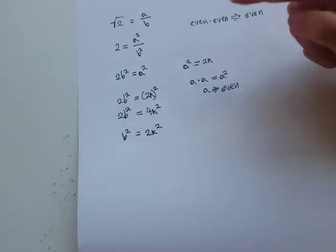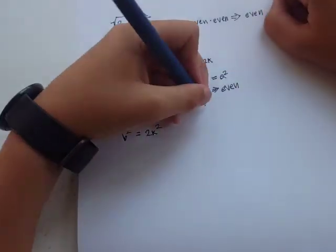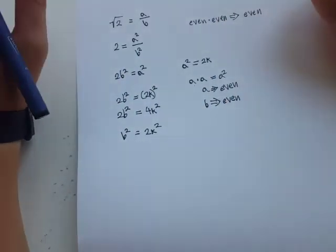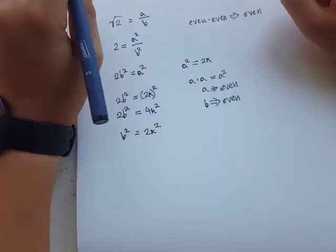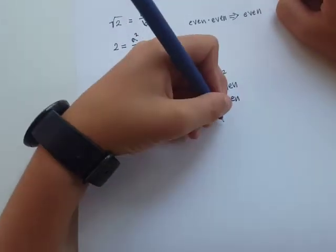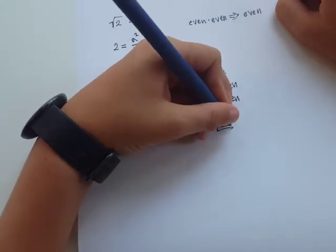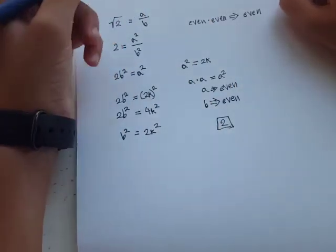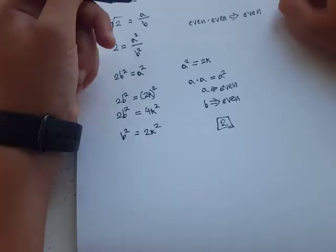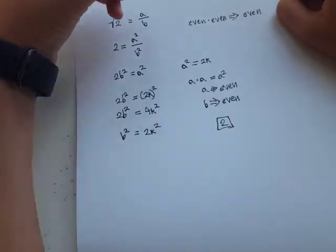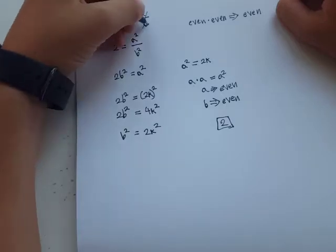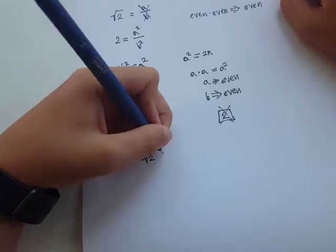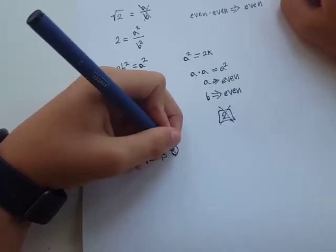So b is also even. Now, if a and b are even, that means that they both have a common factor of 2. So the fraction here is irreducible. It's reducible. a and b are not co-prime. So this is a contradiction. So square root of 2 is not rational.